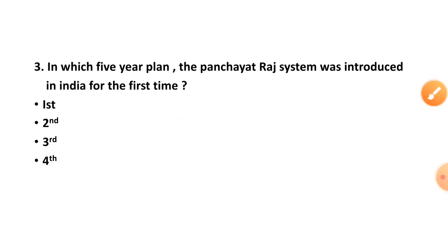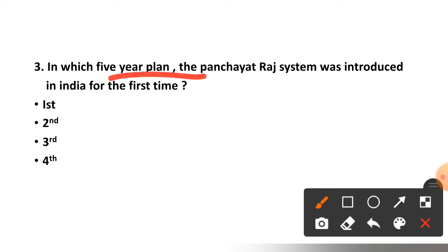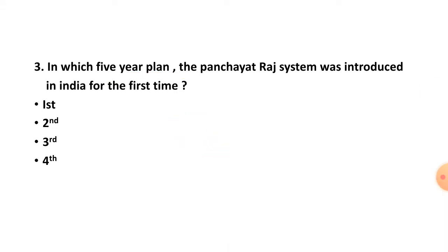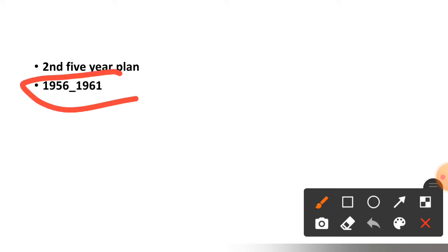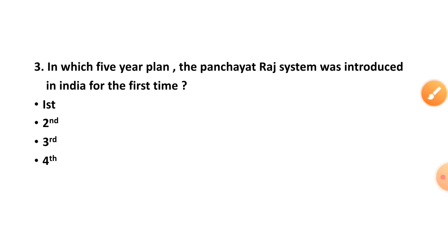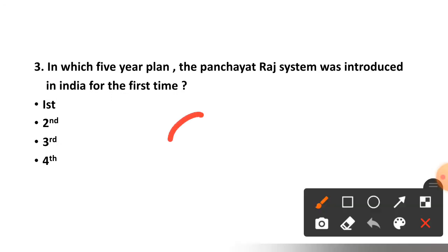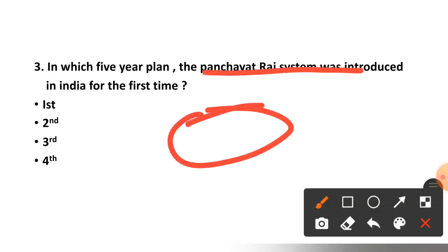Question number three: In which Five Year Plan was the Panchayat Raj system introduced in India for the first time — first, second, third, or fourth? The second Five Year Plan was from 1956 to 1961, and in the second Five Year Plan, the Panchayat Raj system was introduced.